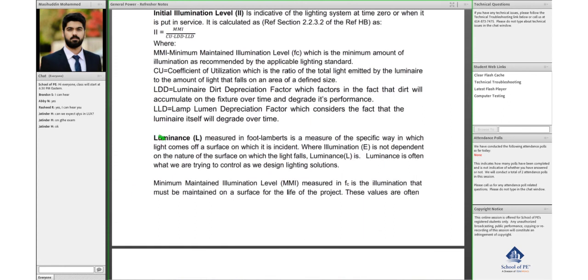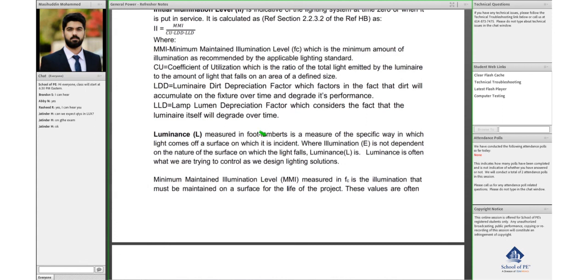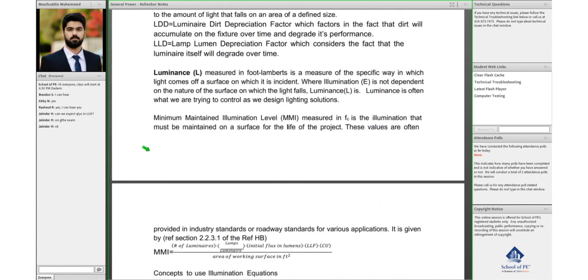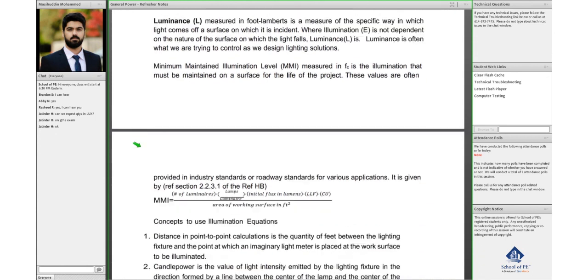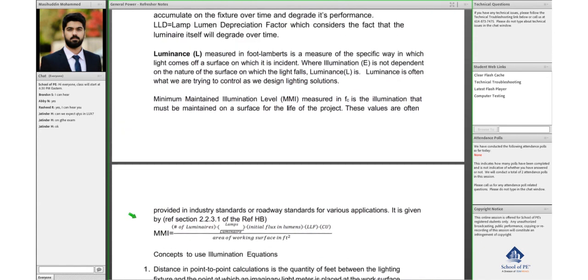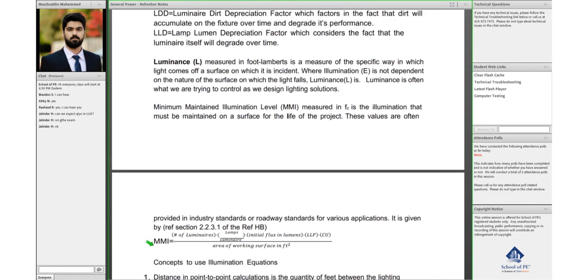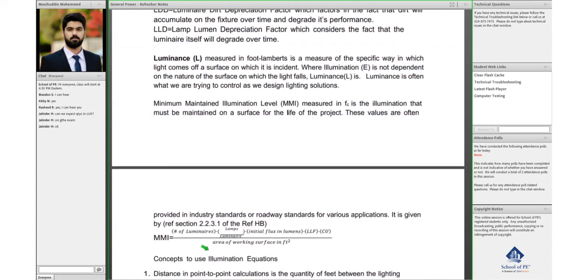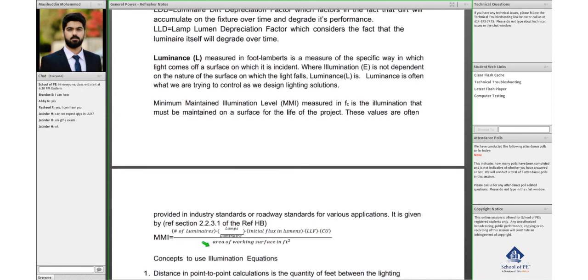Luminance we just saw represented by L. Units are foot lamberts and it's the amount of light perceived by I. The formula for MMI is also given in the handbook. It's the number of luminaires multiplied by lamps per luminaire and initial flux in lumens times light loss factor times coefficient of utilization divided by the area of working surface in feet square.